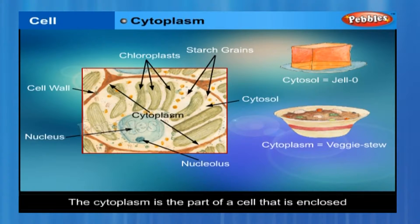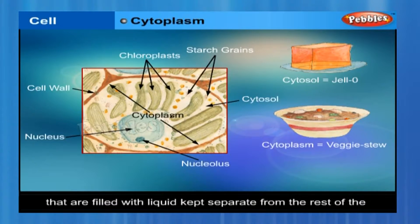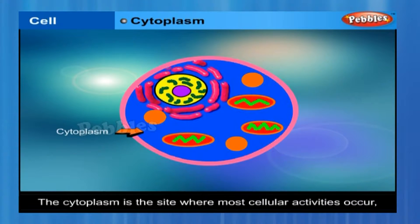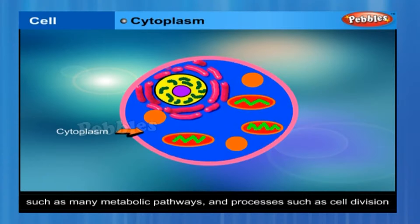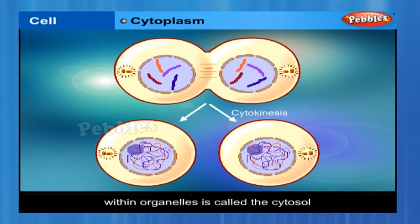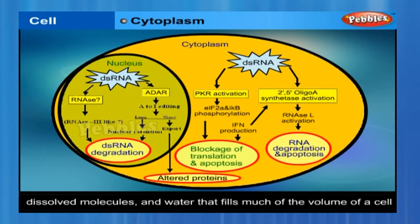The cytoplasm is the part of a cell that is enclosed within the plasma membrane. It contains organelles such as mitochondria that are filled with liquid kept separate from the rest of the cytoplasm by biological membranes. The cytoplasm is the site where most cellular activities occur, such as many metabolic pathways and processes including cell division. The part of the cytoplasm not held within organelles is called the cytosol — a complex mixture of cytoskeleton filaments, dissolved molecules and water.